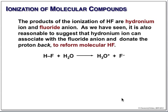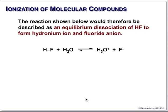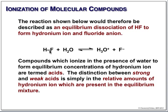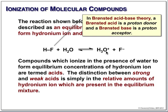This reaction goes both in the forward direction and the reverse direction at the same time. When we have a reaction that proceeds in both directions simultaneously, we call that an equilibrium and show that with a double arrow. In this equilibrium, we're taking hydrogen fluoride and forming hydronium, which makes hydrogen fluoride a Bronsted acid. In the Bronsted acid-base theory, a Bronsted acid is a proton donor — it donates a proton to water to make hydronium. A Bronsted base is simply a proton acceptor. In this reaction, water is the Bronsted base accepting the proton to form hydronium.